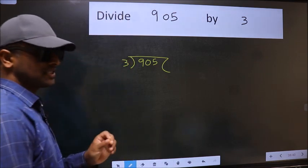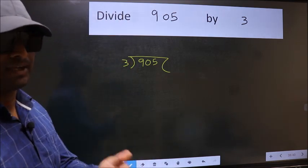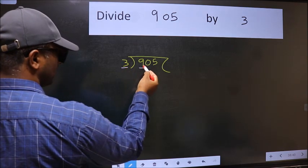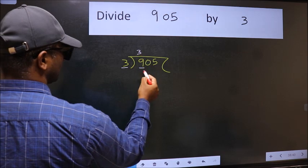This is your step 1. Next, here we have 9 and here 3. When do we get 9 in 3 table? 3 times 3 is 9.